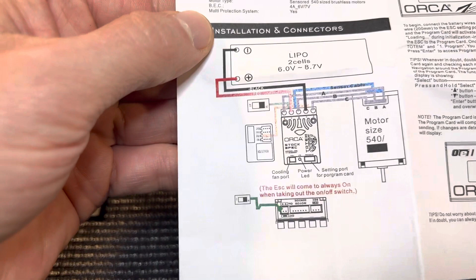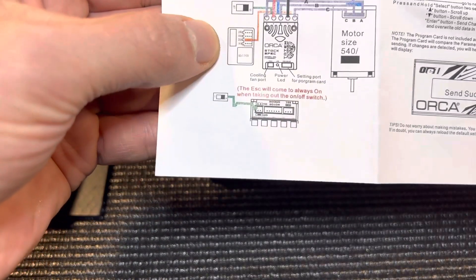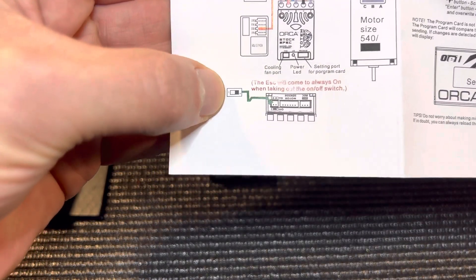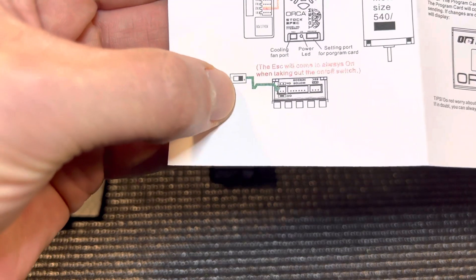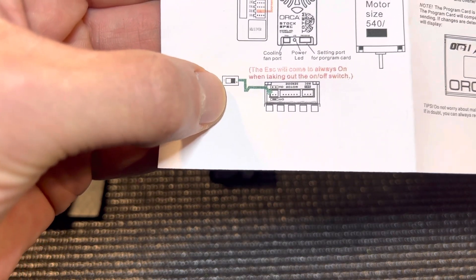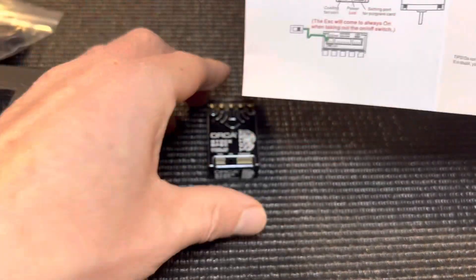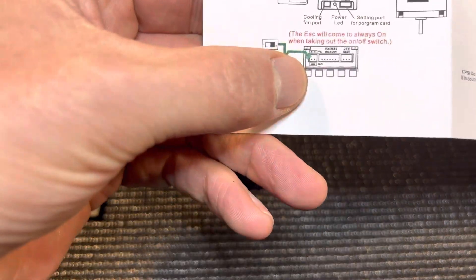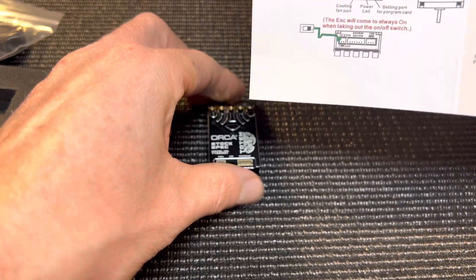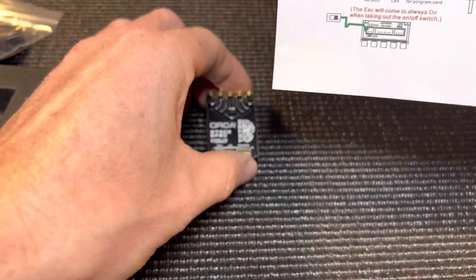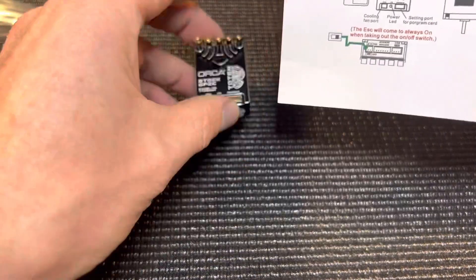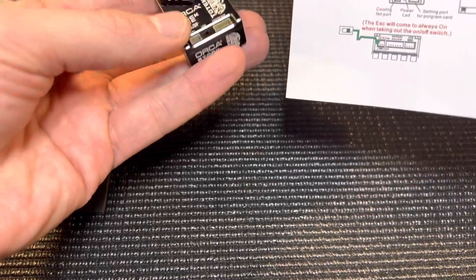Installation and connections, pretty straightforward. This says the ESC will come to always on when taking out the auto switch. Okay, so what that's saying is plugging in the switch is optional. So if you don't put in the switch and you plug in the battery, it's going to power on.